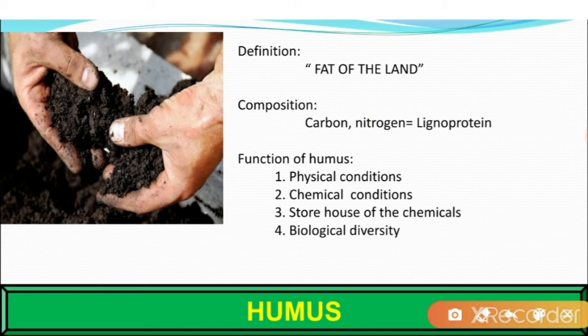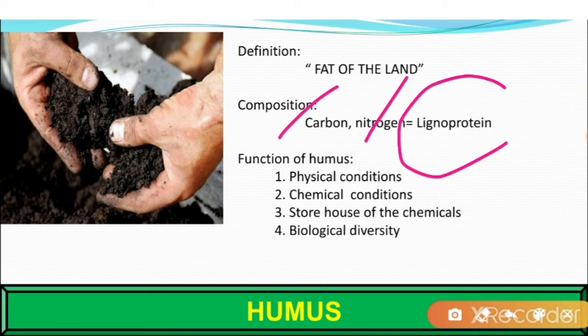The composition of humus varies from soil to soil. It is very complex but is mainly made of carbon and nitrogen, known as lignoprotein. Besides this, it also contains a number of inorganic salts such as phosphates and potassium.